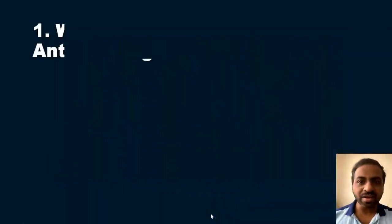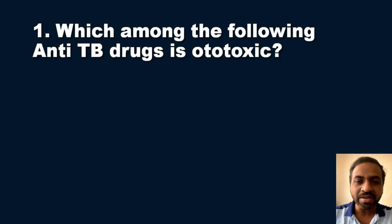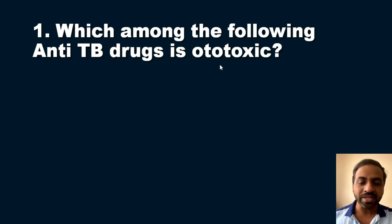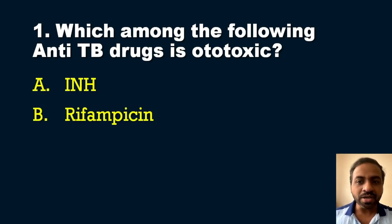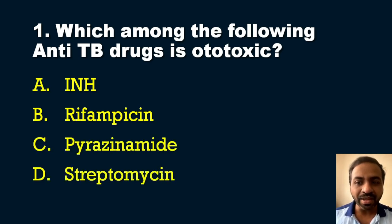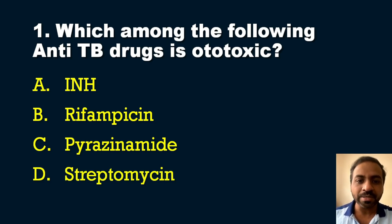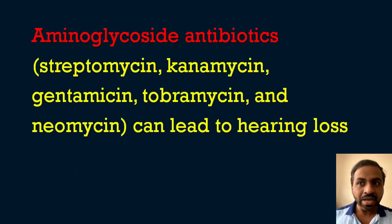The first question is from anti-TB drugs. The question is: which among the following anti-TB drugs is ototoxic? Ototoxicity is a side effect of which anti-TB drug? The options are: A) INH, B) Rifampicin, C) Pyrazinamide, and D) Streptomycin. The answer is option D, Streptomycin. Streptomycin belongs to the aminoglycoside group of antibiotics. Aminoglycoside antibiotics like streptomycin, kanamycin, gentamicin, tobramycin, and neomycin can lead to hearing loss — these are ototoxic drugs.